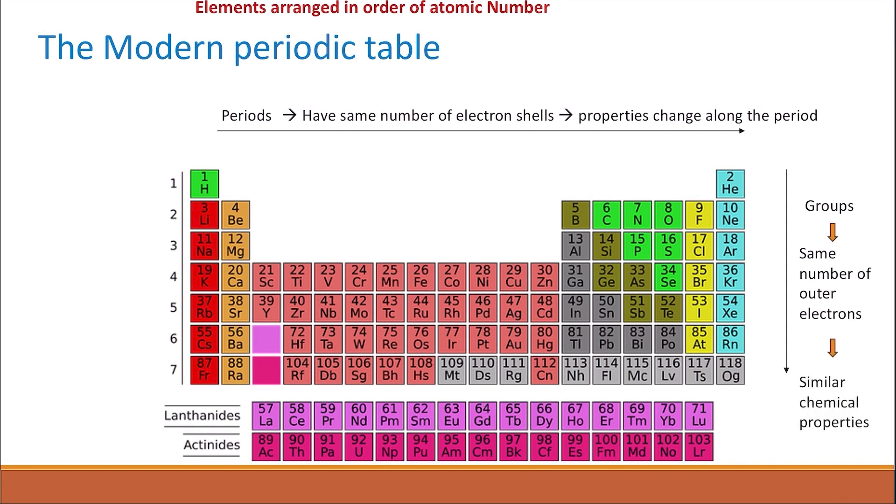All group 1 elements have 1 outer shell electron and all group 2 elements have 2 outer shell electrons. The group at the far right is called group 0 elements or Nobel gases. All have complete outer shell of electrons.